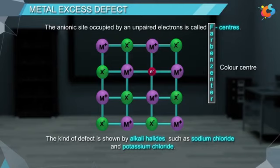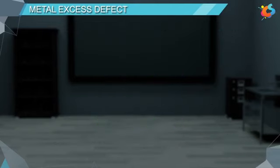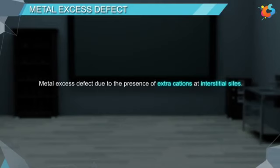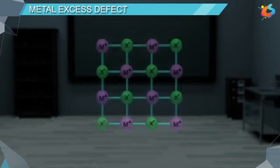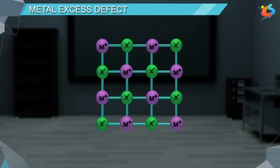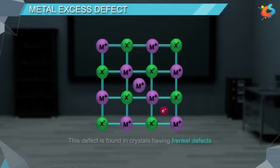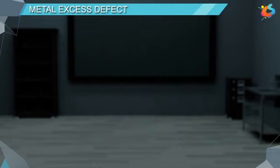Metal excess defect due to the presence of extra cations at interstitial sites: in this type of defect, metal excess is caused by an extra cation occupying the interstitial site. To maintain electrical neutrality, an extra electron is also present in some other interstitial site. This defect is found in crystals having Frenkel defects.